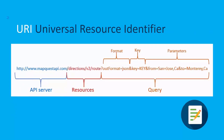REST APIs use universal resource identifiers, similar to a URL but identifying a specific resource. The URI includes the HTTP protocol, the server location with the domain name, the resource path with API-specific information, and the query itself. The query specifies the format — in this case JSON — along with a key that you've requested from the server, and parameters that filter your query. In this example, we're querying MapQuest for directions from San Jose, California to Monterey, California.